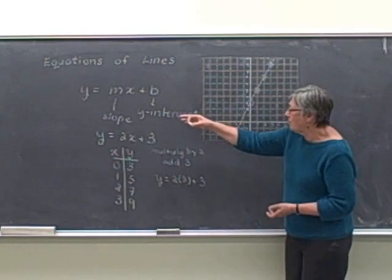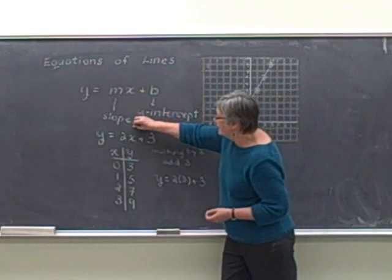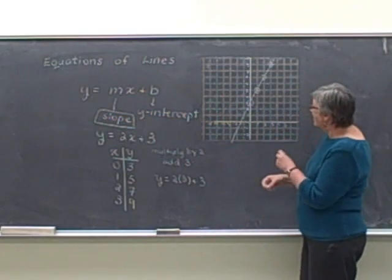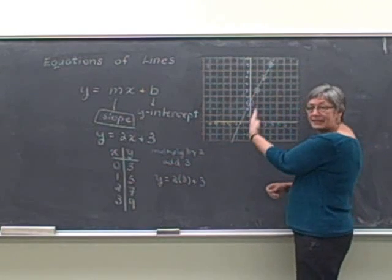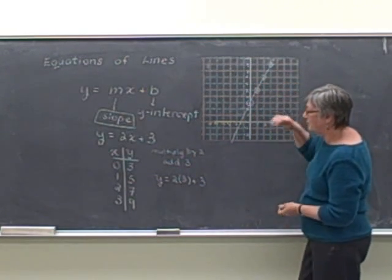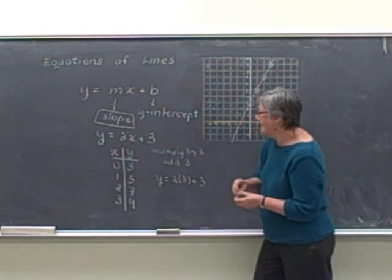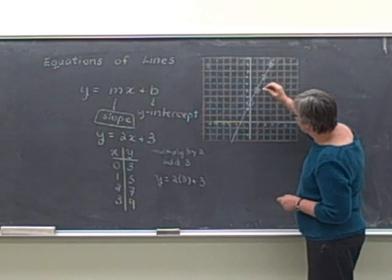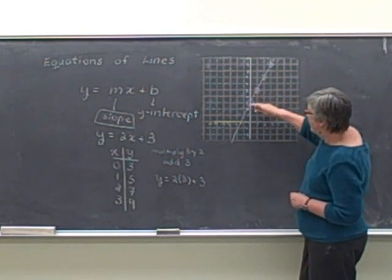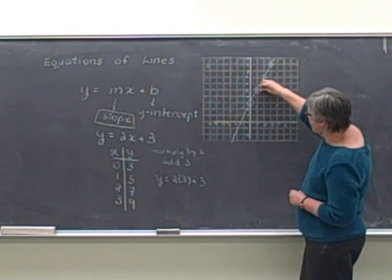Now what do the slope and the intercept have to do with the line that we've drawn? The slope gives us some measure of how slanted the line is. And in this case, this is a pretty steep line. So we're looking just for a number that gives us some sort of indication of that slope. And from the graph, one of the things that we look at is as I go from point to point, how are the y values changing versus the x values?